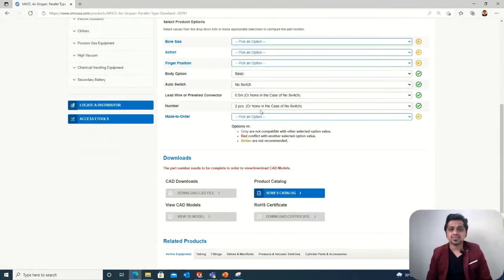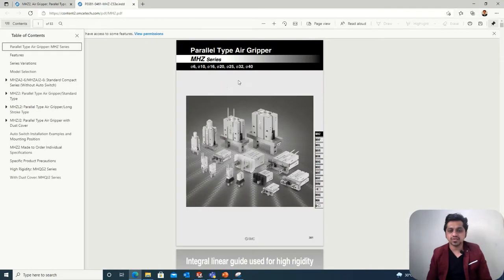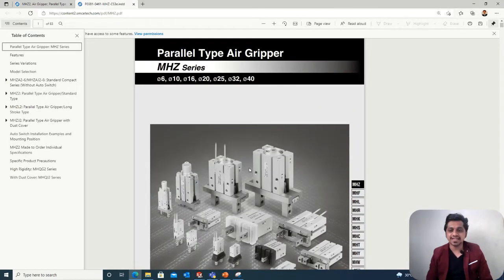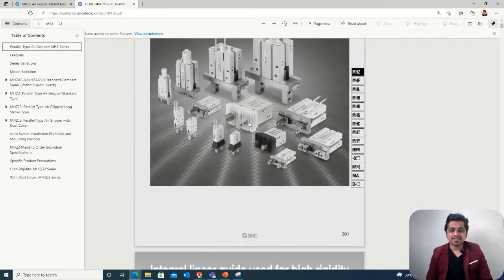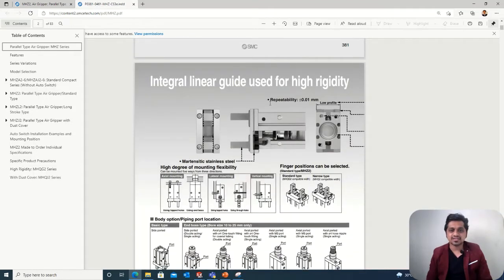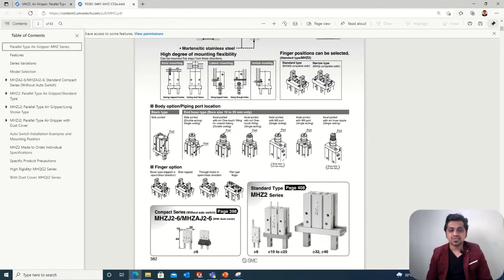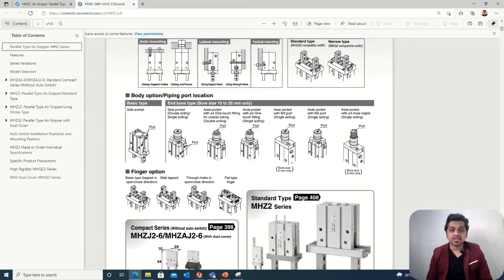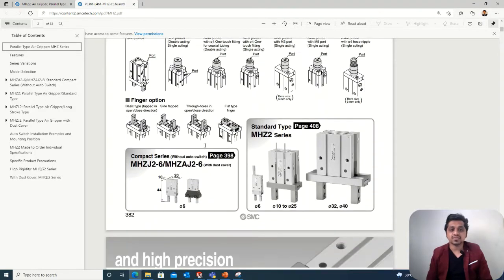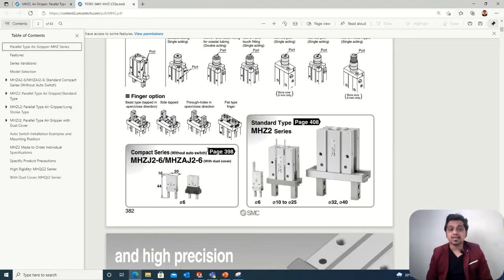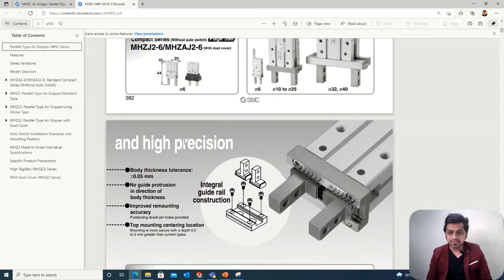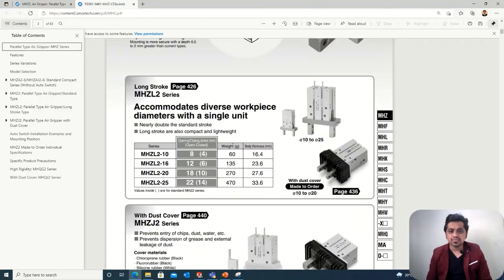Once you enter the standard type, you can see the specifications. First we'll go to the catalog because here we'll find a lot of information. While entering into the catalog, you can see the internal details. They've mentioned what the type is, what the body options are, and the fitting finger options you have. This will help you while choosing the part.